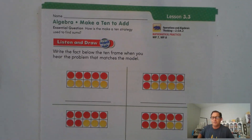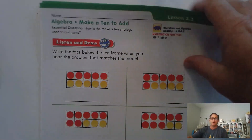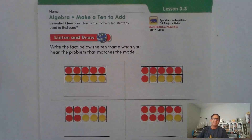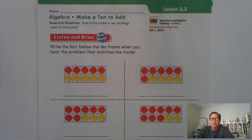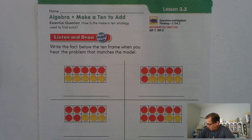Hello, everybody. All right, we're going to continue with chapter three. In today's lesson, it's considered an algebra lesson, and we're going to make a 10 to add. The question we should be able to answer at the end of this lesson is: how is the make-a-10 strategy used to find sums? We're on page 129 of the second grade GoMath textbook.